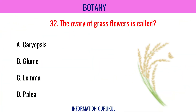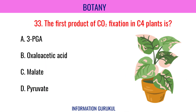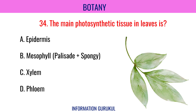The ovary of grass flowers is called caryopsis. The first product of CO₂ fixation in C4 plants is oxaloacetic acid. The main photosynthetic tissue in leaves is mesophyll — palisade plus spongy.